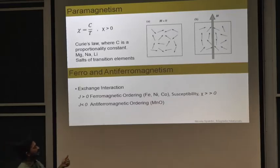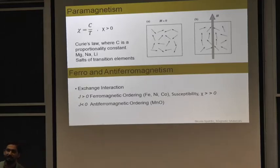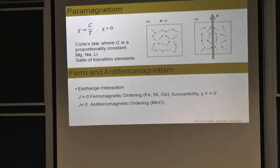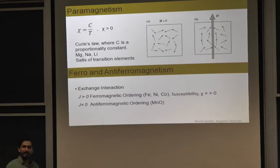When you apply a magnetic field, a small fraction of these spins will get aligned in the direction of the magnetic field. In 1895, Curie experimentally observed that the susceptibility of these materials behaves as 1/T. The behavior of this susceptibility — the variation of magnetization with the applied field — was unexplained until 1905, where Langevin gave his theory of the localized magnetic moment.